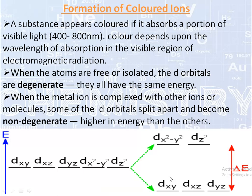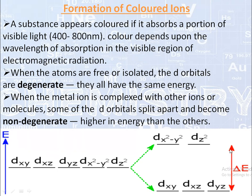When an electron jumps from a lower energy d-orbital to a higher energy d-orbital, that is called a d-d transition. The transition metals have incompletely filled d-orbitals, so the energy required to transfer one or more electrons from a lower to a higher energy level within a d-orbital with the same principal quantum number is very small. The difference in energy between the lower and higher energy d-orbitals generated by the splitting — that is, delta E — is very very small.